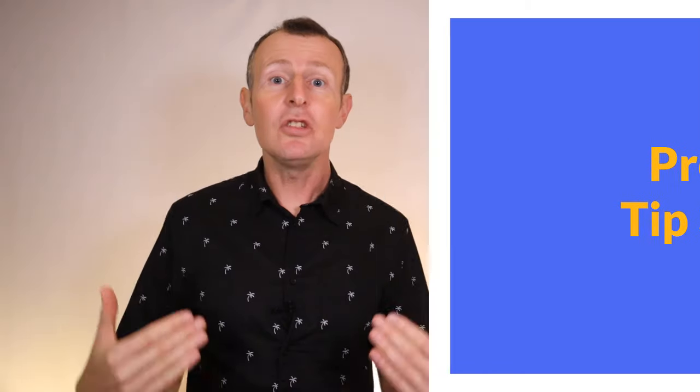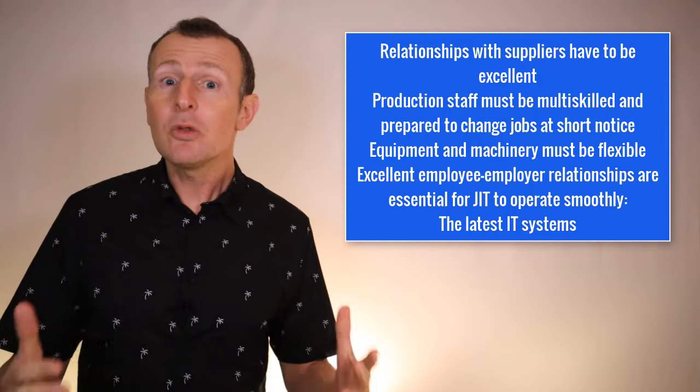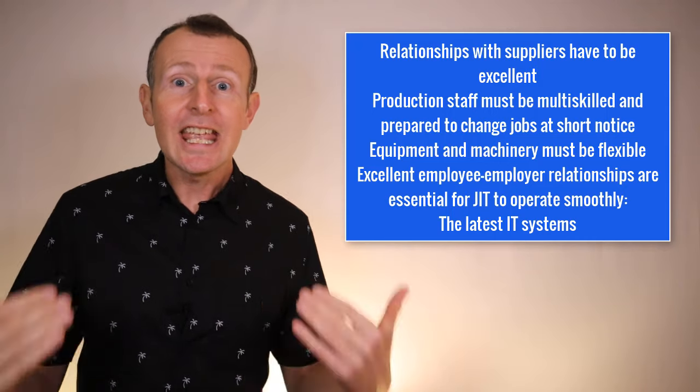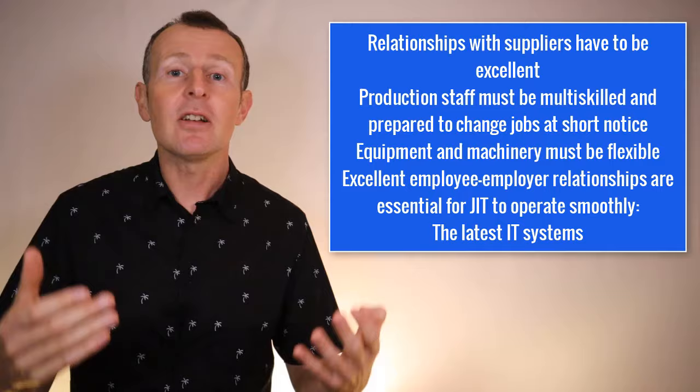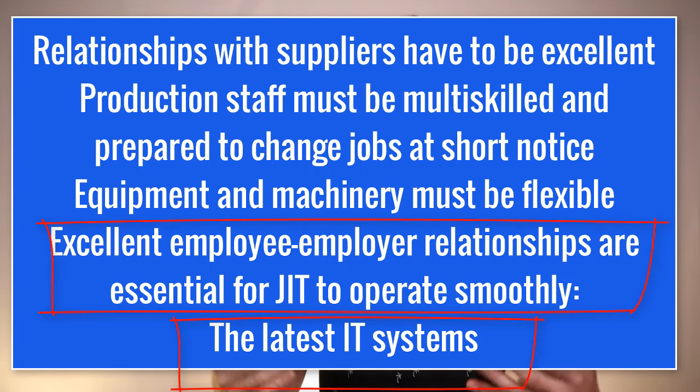Pro tip 3: plan your answer and choose the points that you can most confidently and effectively answer to avoid repetition. For example, with the just-in-time question you could have picked any of several points — think before you start. Which factor will you be able to explain in context, covering the full impact on the successful operation of just-in-time? Also, try to pick two points which are different, so you don't repeat the same points in both paragraphs of analysis.